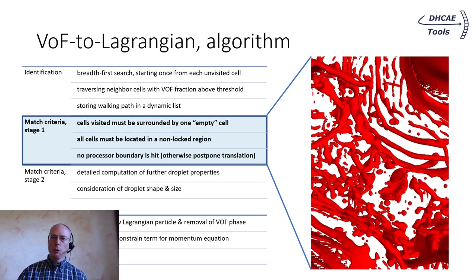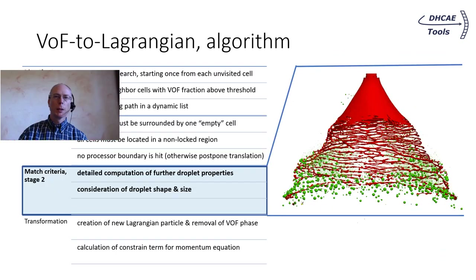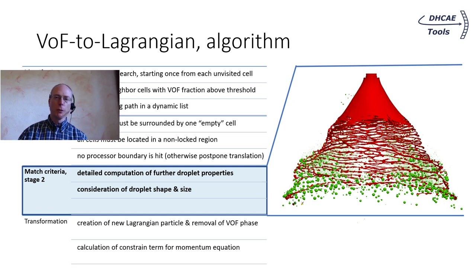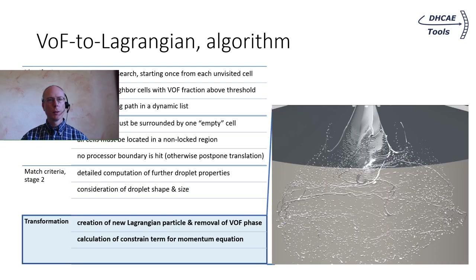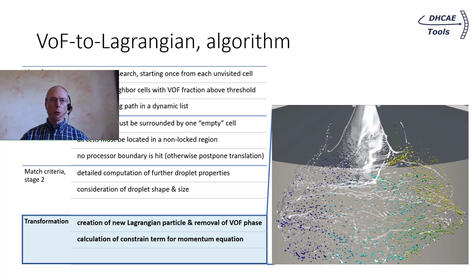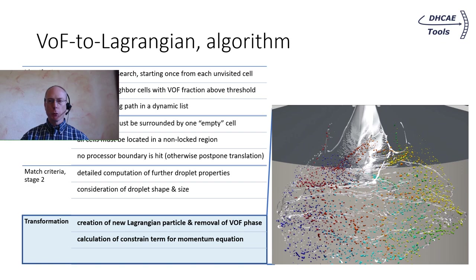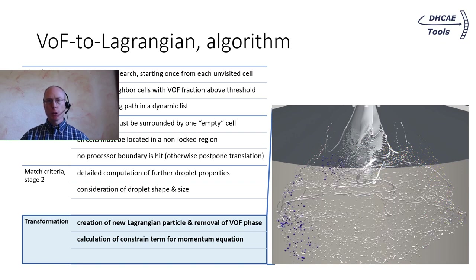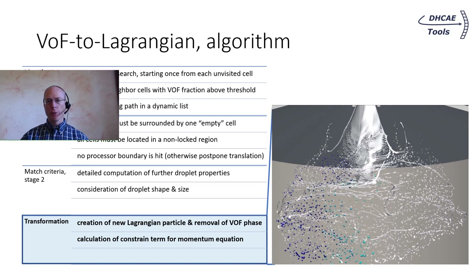Otherwise, the transformation is just postponed a little bit. With the basic matching from stage 1, a few potential candidates are treated in full detail. Droplet size and shape is calculated, along with center of gravity, velocity and so on. Finally, after all tests are passed, the new Lagrangian particle is created and the volume of fluid fraction in the cells is set to zero. A constraint term is calculated for the momentum equation and with the cleared alpha field the grid can be unrefined again. The animation shows the identification process on a single processor step-by-step.